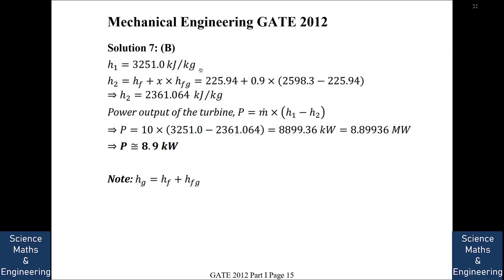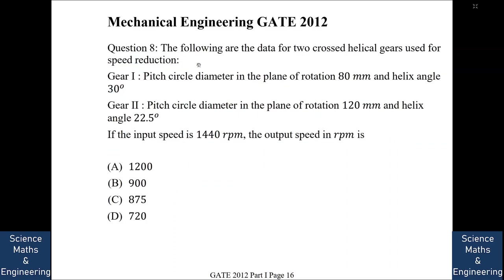h1 is already given. h2 is found using the quality of steam and the known hf and hg values, where hfg = hg − hf. From this we get h2 = 2361.064 kJ/kg. Power output of the turbine is ṁ(h1 − h2), neglecting losses, giving power approximately equal to 8.9 kW. This is option B.